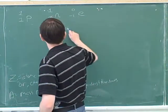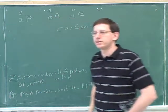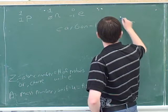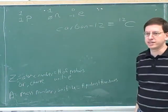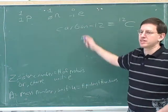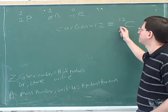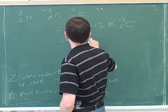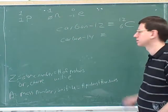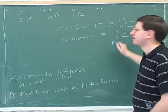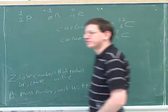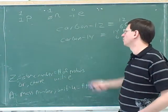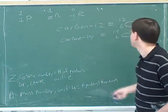Suppose someone talks about carbon-12. What does the 12 tell you? The mass number. Carbon-12 written with a number after the name is just another convention for the same thing. When people give you a number after the element name, they mean the mass number. They don't need to give the atomic number because we can figure that out from the element — for carbon it's 6. So carbon-14 has a mass number of 14 but the atomic number is still 6.